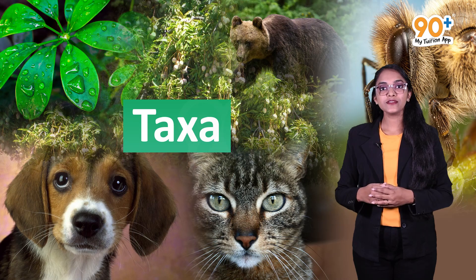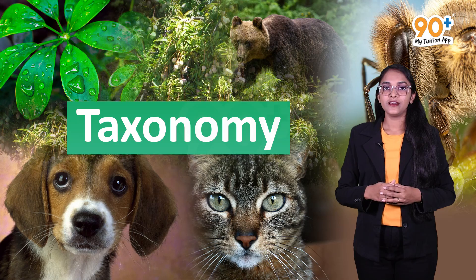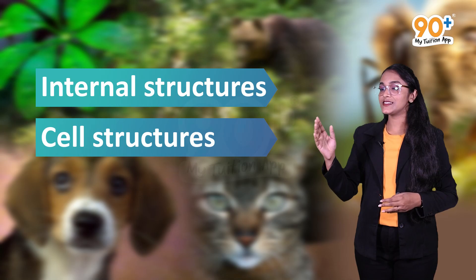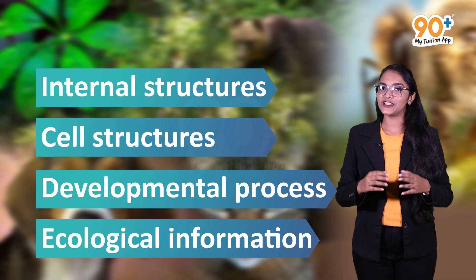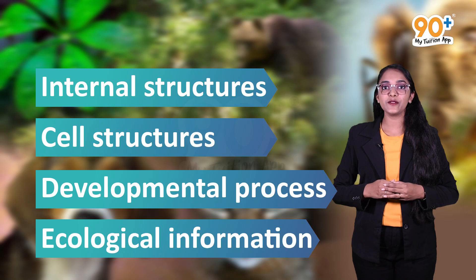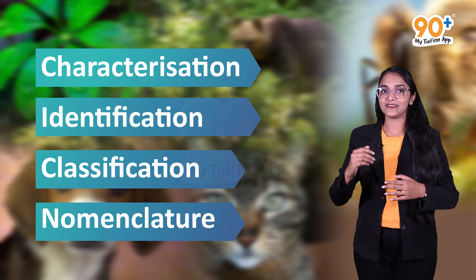We can use 'taxa' as a scientific word instead of 'group.' Since taxa is used for classification, the process is called taxonomy. While classifying organisms, not only external characters but also internal structures, cell developmental processes, and ecological information are used. The basic processes in taxonomy are characterization, identification, classification, and nomenclature.